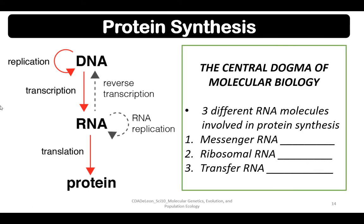Now let's discuss protein synthesis, which is one of the vital processes in life. Protein synthesis is the central dogma of molecular biology — it is the fundamental process present in every life form. In terms of RNA, we have three types involved in the whole protein synthesis procedure: mRNA or messenger RNA, ribosomal RNA or rRNA, and transfer RNA or tRNA.